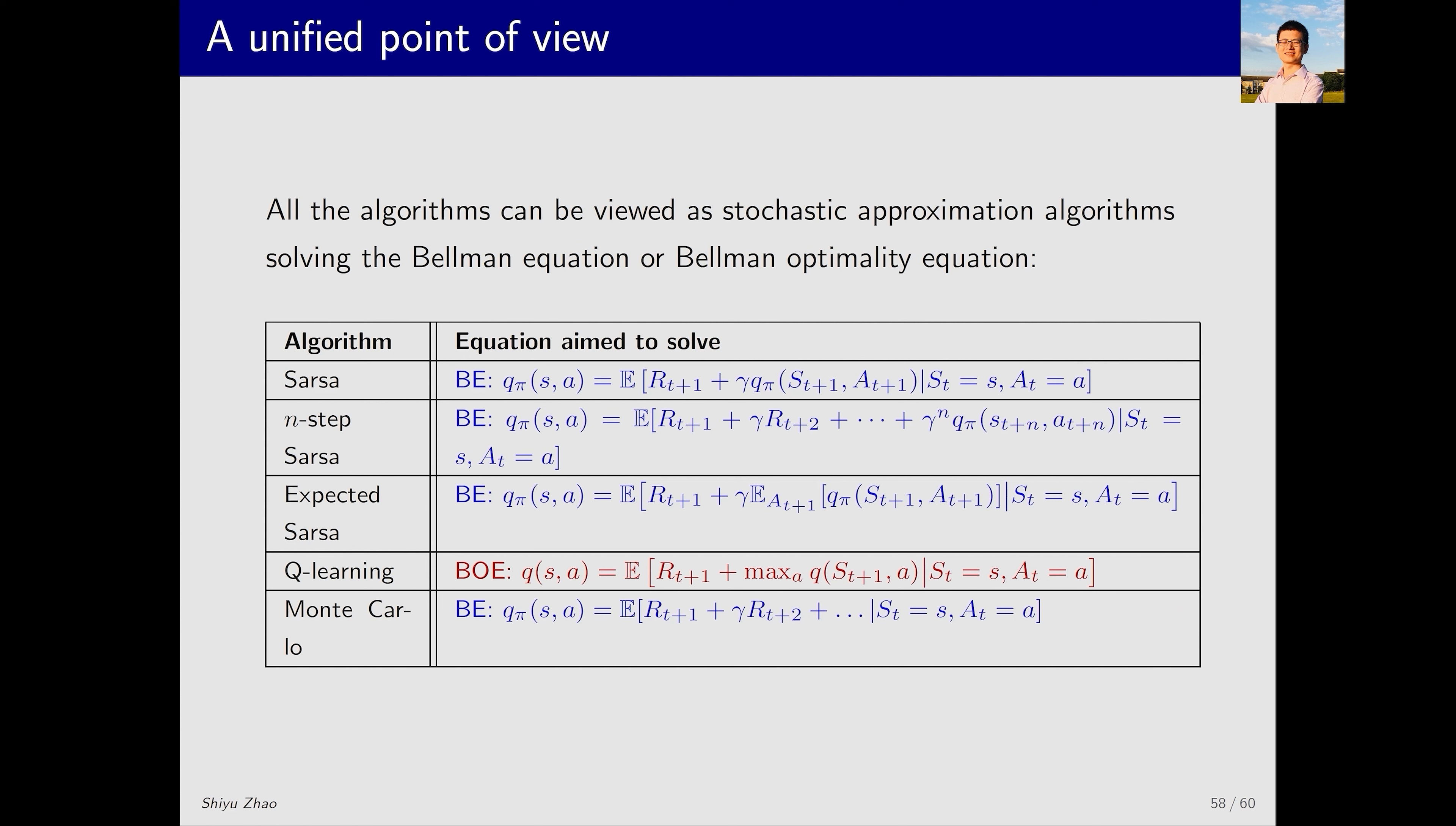Apart from this unified form, what the algorithms do mathematically can also be described in a unified way. What do they do mathematically? They are solving some equations, either the Bellman equation or the Bellman optimality equation. The TD algorithms are actually stochastic approximation algorithms for solving these equations.